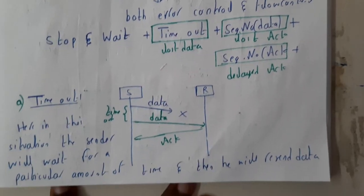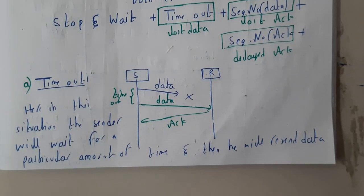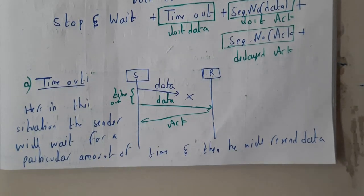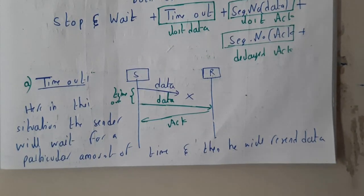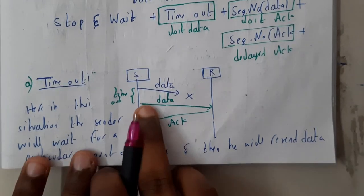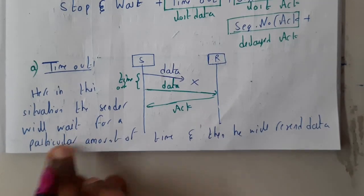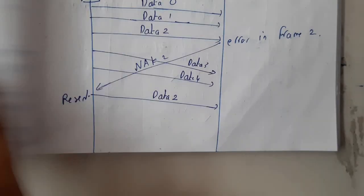Timeout means we give a fixed amount of time to receive the return acknowledgement. For example, if data takes 10 minutes to reach the receiver and 10 minutes to return, the total is 20 minutes, so you set the timeout to 30 minutes. If no acknowledgement is received within 30 minutes, the sender resends the data. The sender waits for a particular amount of time and then resends if no acknowledgement has been received.